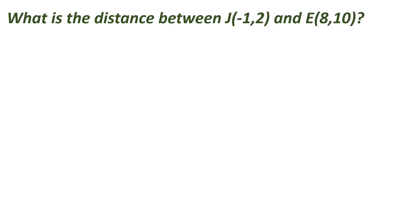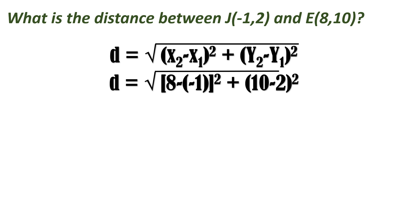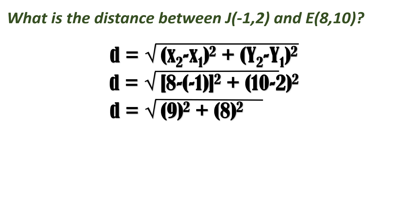So what's the distance between negative 1, 2 and 8, 10? Using the formula, we substitute: square root of (8 minus negative 1) squared plus (10 minus 2) squared. Solving inside the parentheses: 8 minus negative 1 gives us 8 plus 1, squared, plus 8 squared. So 9 squared is 81 and 8 squared is 64.